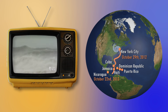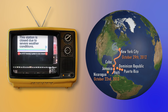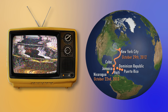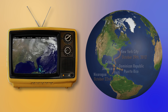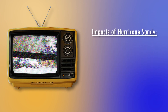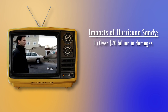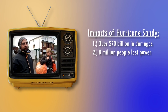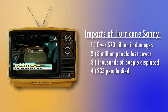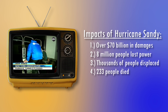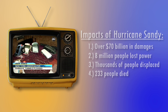Parts of Staten Island, Brooklyn, and Lower Manhattan flooded as a result of the storm. The subway system in New York was shut down. Many homes in Staten Island were destroyed. Superstorm Sandy finally stopped on November 2nd, 2012. The storm caused over $70 billion in damages and caused over 8 million people to lose power in their homes. Thousands of people were displaced from their homes. 233 people died as a result of Hurricane Sandy, 44 of those being New York residents.